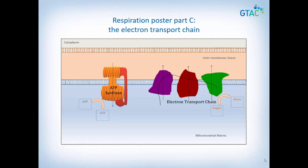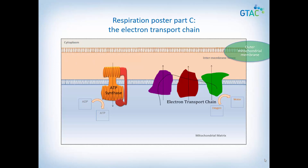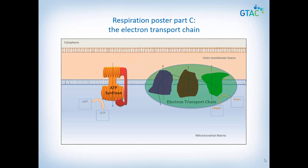Let's get familiar with the parts of respiration poster C. Find the mitochondria matrix — this is shaded blue. Now locate the inner membrane of the mitochondria, then the outer membrane of the mitochondria. The space between the inner and outer mitochondrial membrane is called the intermembrane space. There are three proteins clustered together on the inner membrane — this is the electron transport chain. There is also an enzyme called ATP synthase embedded in the inner membrane.